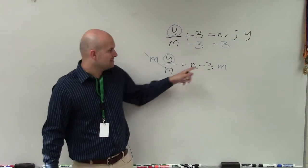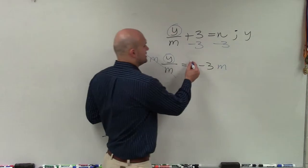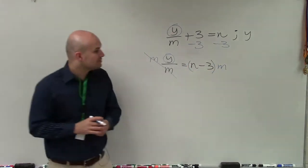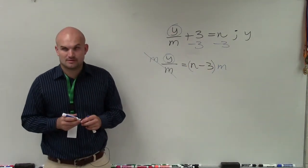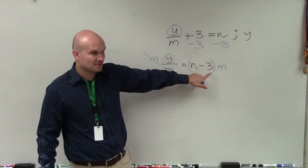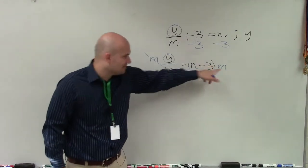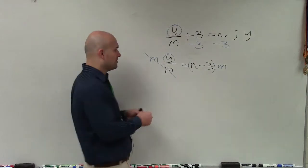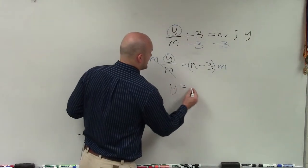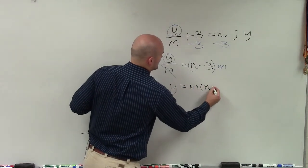you've got to be really careful. This is m times the expression n minus 3. So we need to make sure we put parentheses around that, all right? Because if you don't put parentheses, it's not m times negative 3. It's m times negative 3 and m times n. It's multiplied by both of them. So your final answer is y equals m times n minus 3.